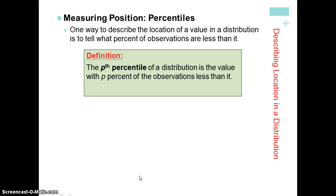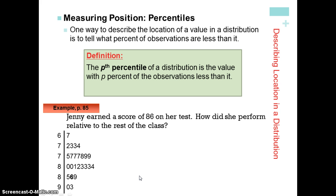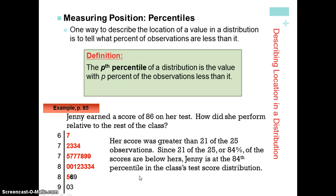So, this again is something that we're familiar with. For example, Jenny earned a score of 86 on her test. How did she perform relative to the rest of the class? Well, we can see that Jenny's score of 86 is the one in bold on the stem plot and it is greater than 21 out of the 25 observations. So, 84% of the scores are below Jenny's. That means she measures in at the 84th percentile in the class's test score distribution.